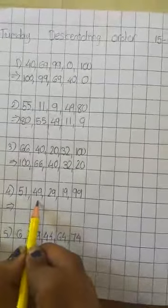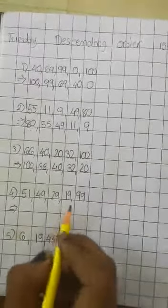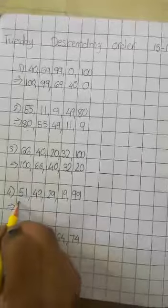Now, next. 51, 49, 29, 99. Which number is big? 99. Write first 99.